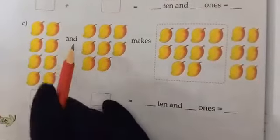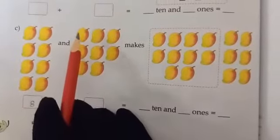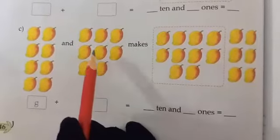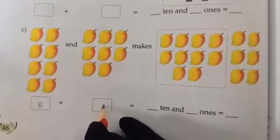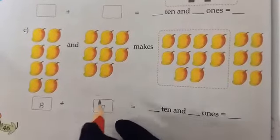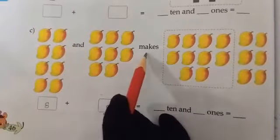So write in the box. Plus, and. Now count another group of mangoes. 1, 2, 3, 4, 5, 6, 7, 8. So again there are 8 mangoes. Now 8 and 8 mix.